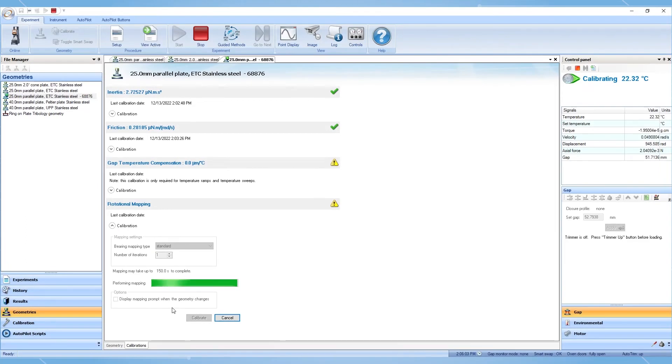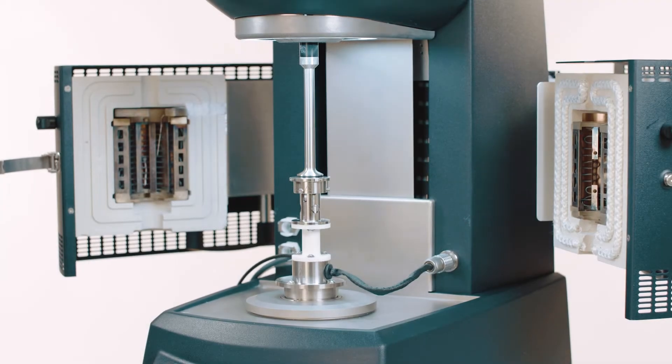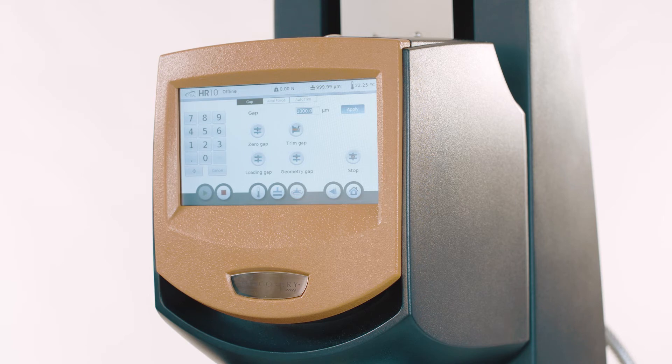Gap temperature compensation is used for temperature ramps and sweeps. Lower the geometry to approximately one to two millimeters above the bottom plate. Equilibrate at the desired temperature for at least five minutes.